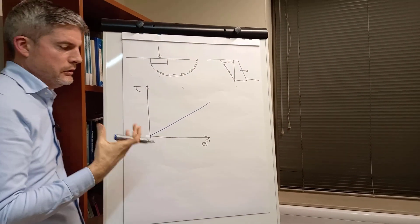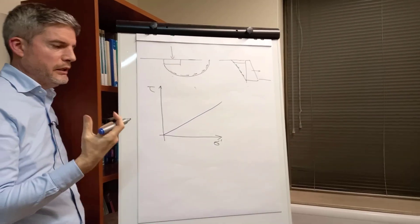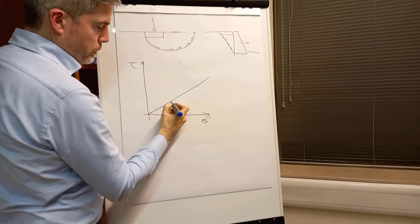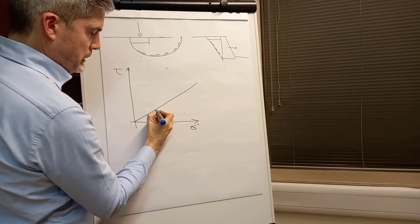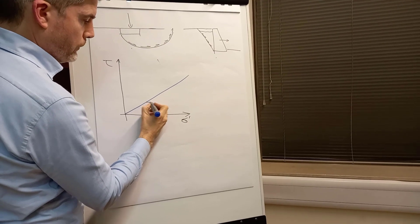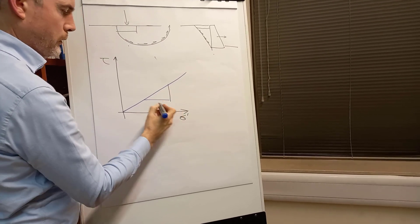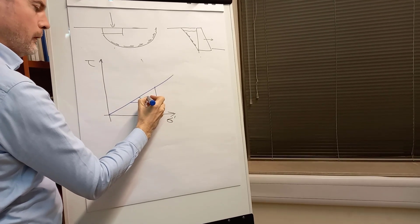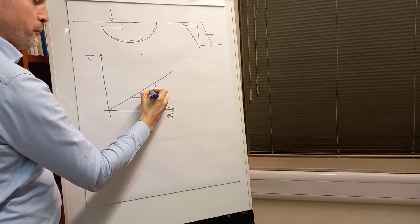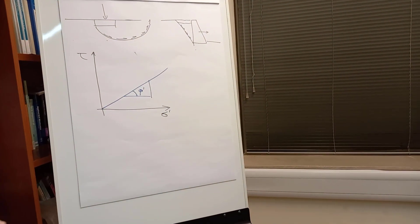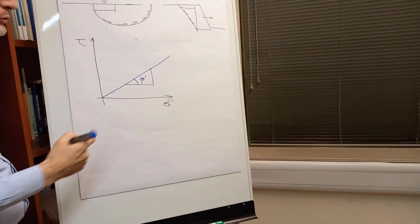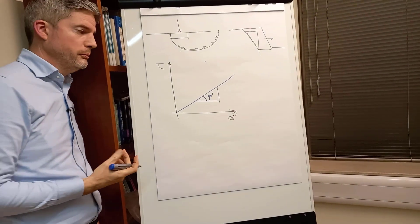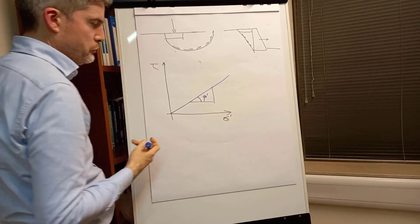So we can't express soil strength as a single value of shear stress because it's changing. So we express it as this slope here, or as an angle phi, with a prime to show that it's in terms of effective stress. So soil strength is actually expressed as a friction angle. That makes it a very unusual material for use in construction.